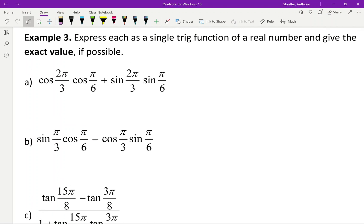So let's continue on here. Express each as a single trig function of a real number and give the exact value if possible. Now this one actually is going to work out a lot easier than the previous one because a lot of the work has actually already been kind of done for us. So let's look at this right here. In the first case we have cos 2π/3 cos π/6 plus sine 2π/3 sine π/6.